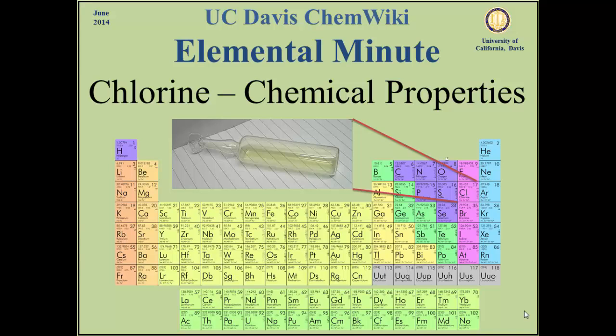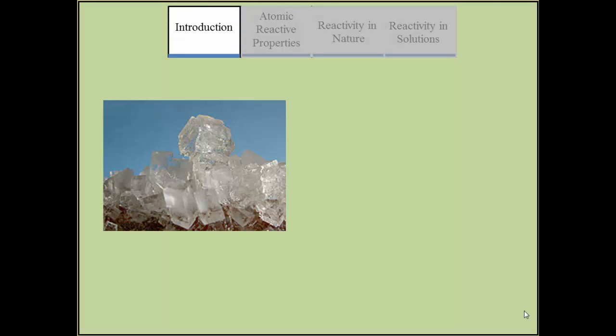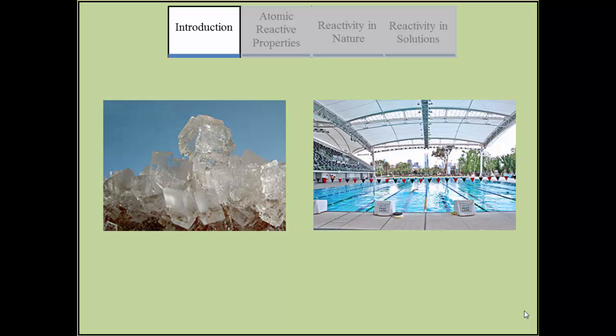Chlorine is an element in the halogen group of the periodic table. It's commonly found as salt in the earth's seas and mostly used in disinfecting products, such as for swimming pools.